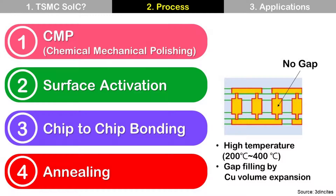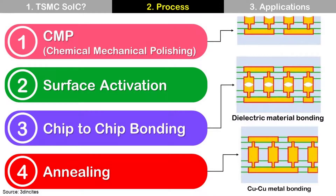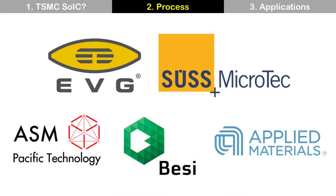In summary: Step 1 is CMP. Step 2 is Surface Activation by plasma. Step 3 is chip-to-chip bonding for dielectric material bonding at room temperature. Step 4 is annealing for copper-to-copper metal bonding at high temperature. Chip-to-chip bonding is made in two areas: one between dielectric material at room temperature, and the other between copper pads at high temperature. Key machine suppliers related to this bonding technology are EVG, SUSS MicroTec, ASM Pacific, BESI, and Applied Materials.